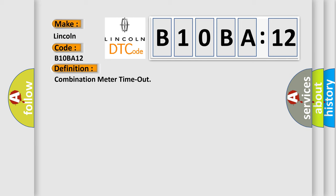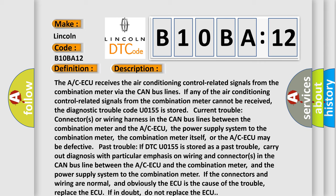And now this is a short description of this DTC code. The ACAQ receives the air conditioning control related signals from the combination meter via the CAN bus lines. If any of the air conditioning control related signals from the combination meter cannot be received, the diagnostic trouble code U0155 is stored. Current trouble: connectors or wiring harness in the CAN bus lines between the combination meter and the ACAQ. The power supply system to the combination meter itself or the ACAQ may be defective. Past trouble: if DTC U0155 is stored as a past trouble, carry out diagnosis with particular emphasis on wiring and connectors in the CAN bus line between the ACAQ and the combination meter, and the power supply system to the combination meter. If the connectors and wiring are normal and obviously the ACAQ is the cause of the trouble, replace the ACAQ. If in doubt, do not replace the ACAQ.